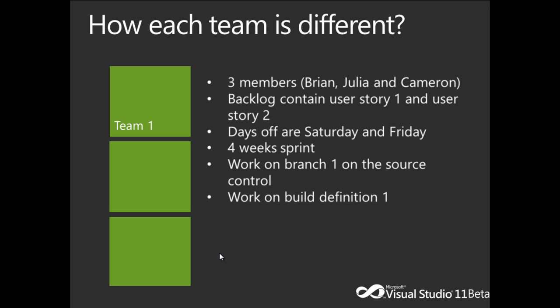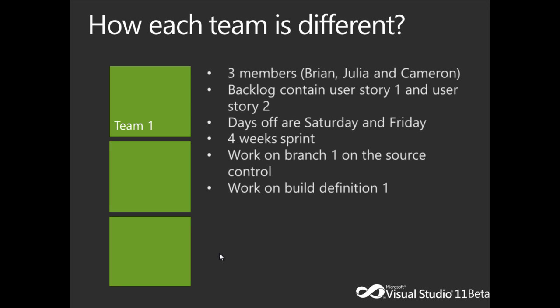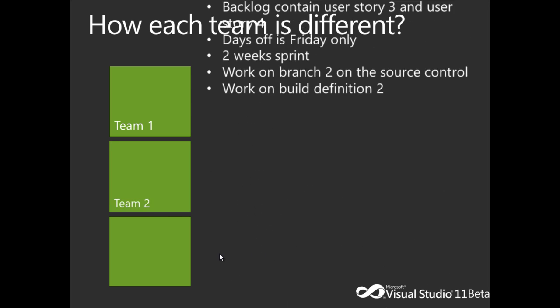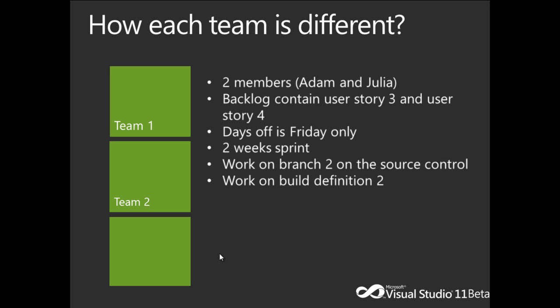Team 1 will have three members: Brian, Julia, and Cameron. Their backlog contains user story 1 and user story 2. Days off are Saturday and Friday. Four-week sprint, work on branch 1 in source control, work on build definition 1. Team 2 has two members: Adam and Julia. Their backlog contains user story 3 and user story 4. Days off is Friday only. Two-week sprint, work on branch 2 in source control, working on build definition 2.